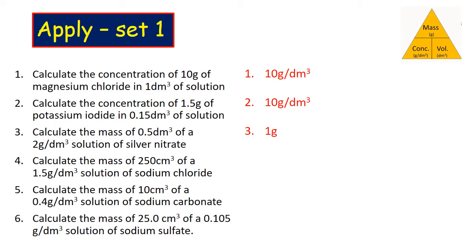Calculate the mass of 250 cm³ of 1.5 g/dm³ of solution of sodium chloride. You need to make sure you convert your volumes here. And you should get 0.375 grams.